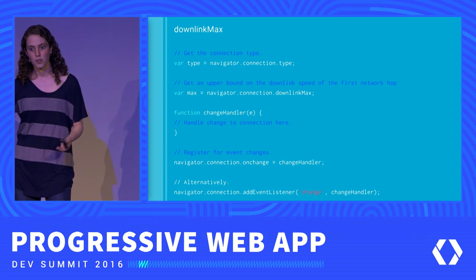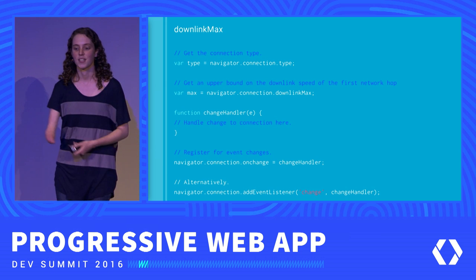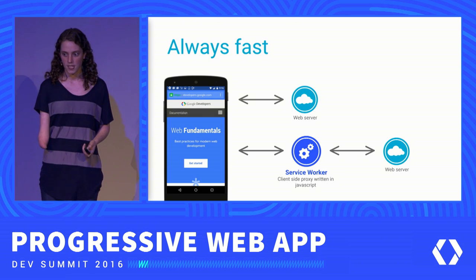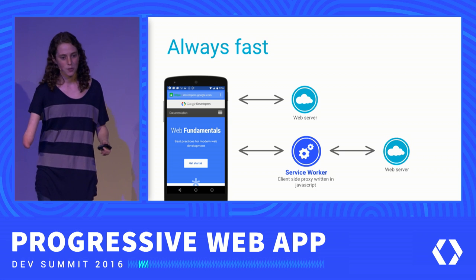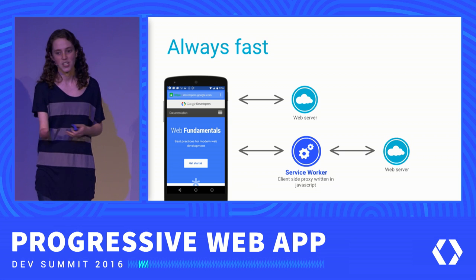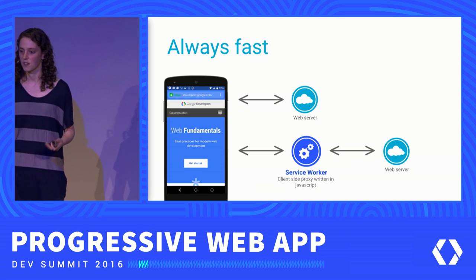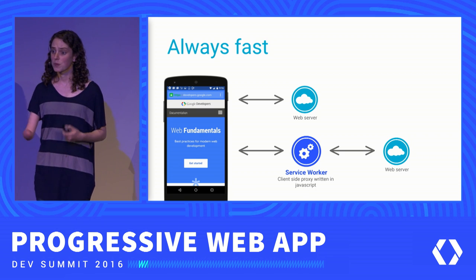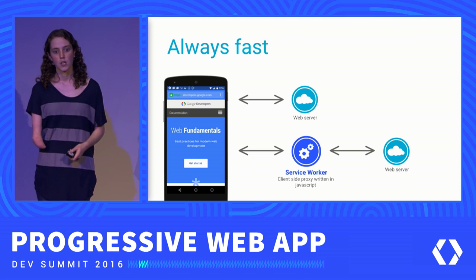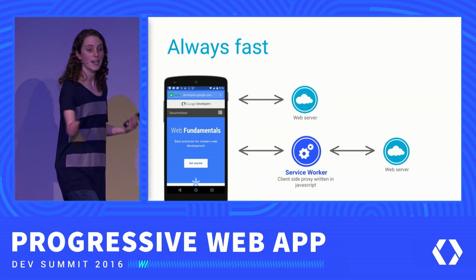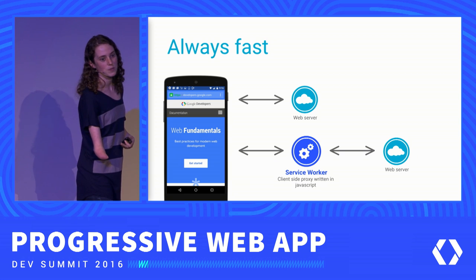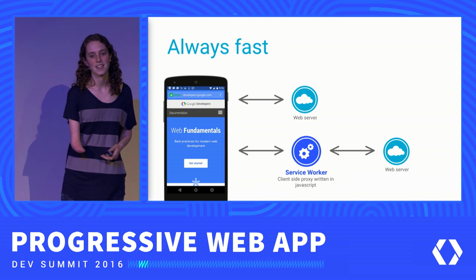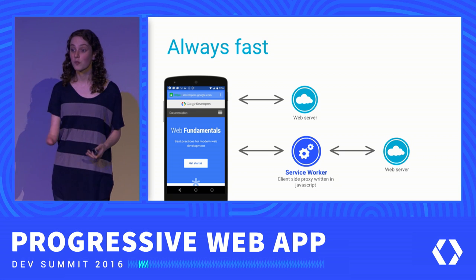But what can you actually do about it when you know your user is on a 2G connection? We've heard a lot about Service Worker today — it's a client-side proxy written in JavaScript, and you can use it to support offline and all these things. But you can also use it to make sure that your experience is as fast as possible. Jake this morning talked about the experience where your phone thinks it's connected but you as a user are not actually getting anything, and this can be incredibly frustrating — not only on really flaky intermittent connections, but also when you're on a really slow connection and the round trip times are just so large.